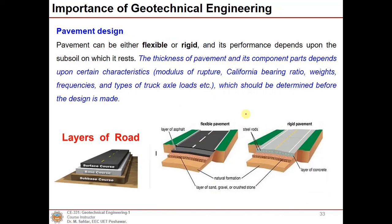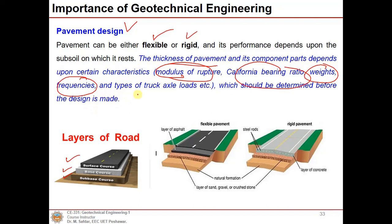If we are designing a pavement, different layers include sub-base, base course, and surface course placed on the soil. Whether it is flexible or rigid pavement, its performance depends upon the subsoil on which it rests. The thickness of the pavement and its components depend on characteristics such as modulus of rupture, California Bearing Ratio, unit weights, frequency of loads, and truck axial loads. Information about soil particle types, compaction, and consistency of the soil is also important.